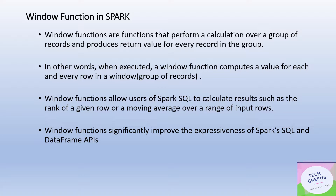When a window function is executed, it will compute a return value for each and every row in the window. The window is nothing but that group of records on which we are applying the window function. Window functions help us deal with situations like finding the rank of different records within one particular group, or calculating a moving average over a range of given input rows.